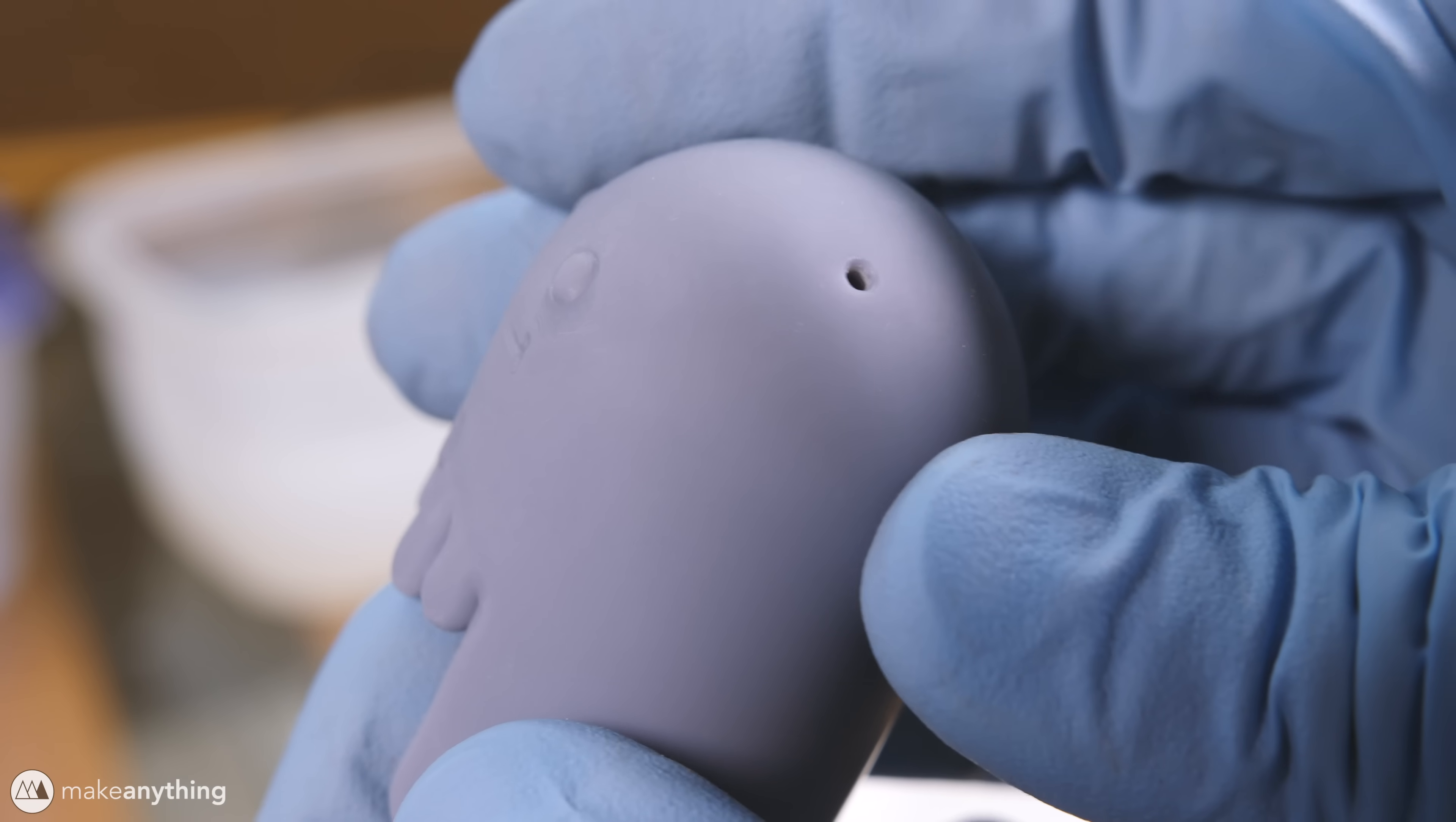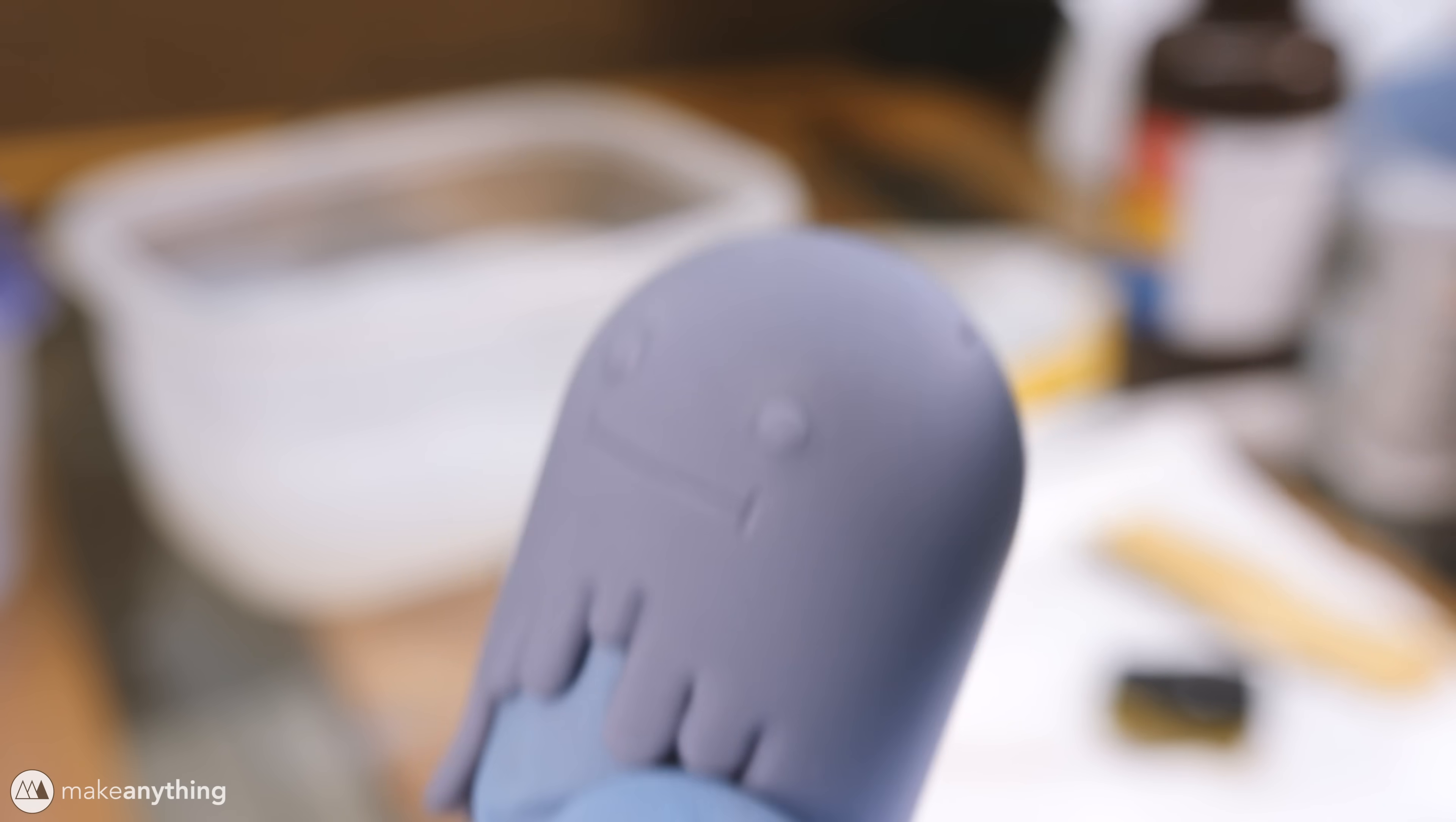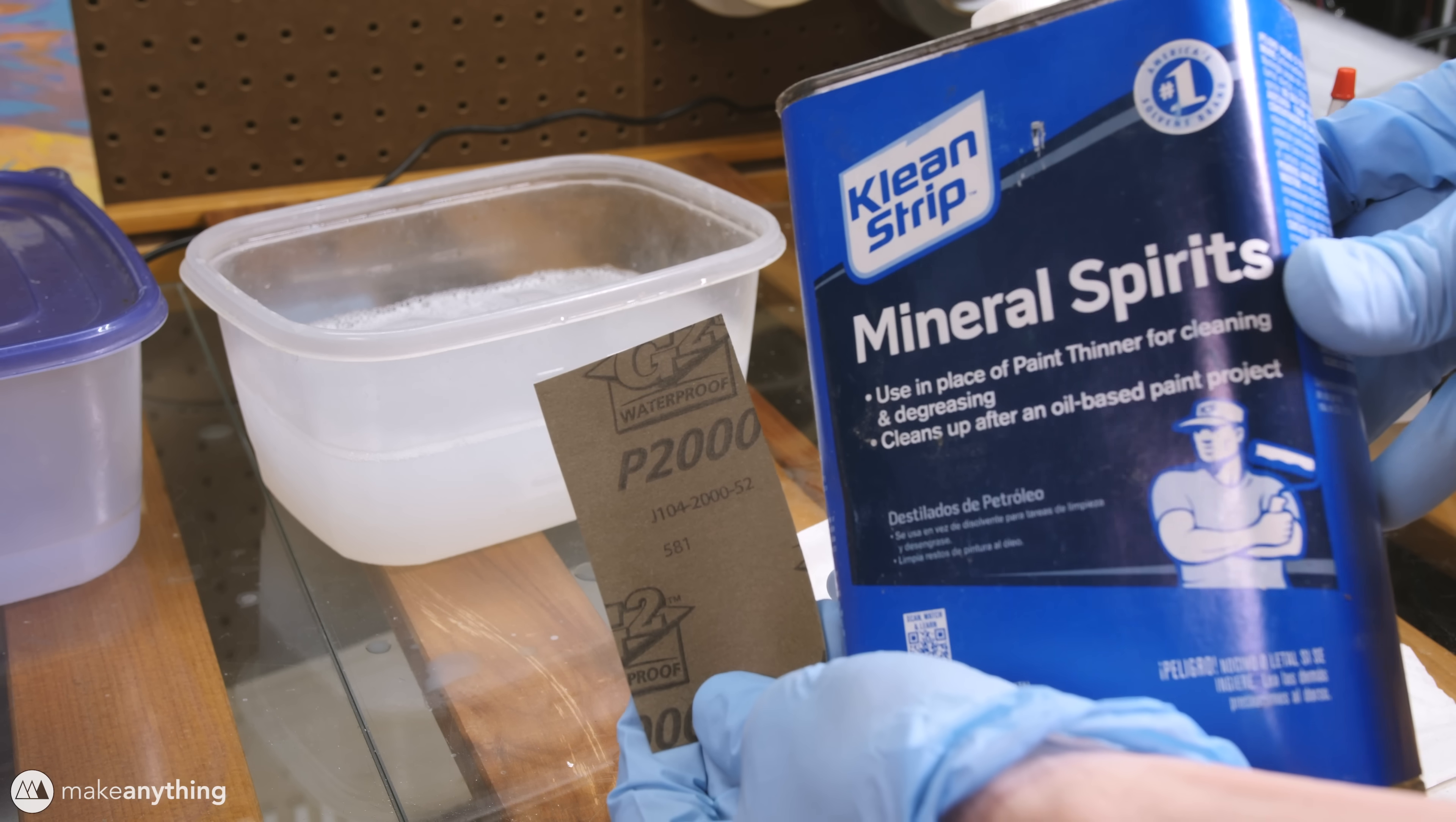Here we are sanded to 600 grit, the model is definitely looking nicer but I'm still not satisfied. So I'm gonna do a final round of sanding this time using mineral spirits instead of that soapy water and I'm gonna use some 2,000 grit sandpaper. This combination should leave us with a really clean finish.